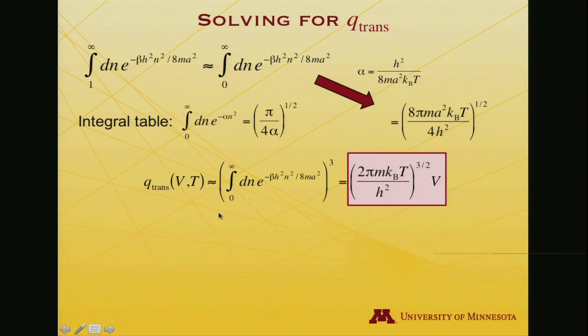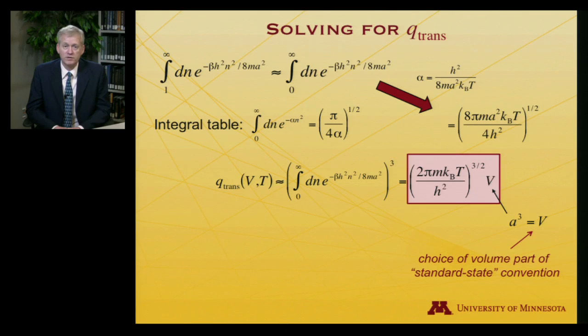In order then to get the translational partition function, that was simply the cube of this integral. When I do that, I'll get the whole thing to the 3/2 power instead of the 1/2 power. I'll take an 8 divided by a 4 and I'll just replace that with a 2. The last thing I'll do is notice I had a² all to the 1/2 power, so that's just a. When I cube it, I'll get a³. And what is a³? a³ is the volume of the box we were solving the particle in a box equation for. So I'll just pull that out to really emphasize here's where the volume dependence comes in to the translational partition function. It's this expression which depends on the mass of the atom, Boltzmann's constant, the temperature, Planck's constant, and volume.